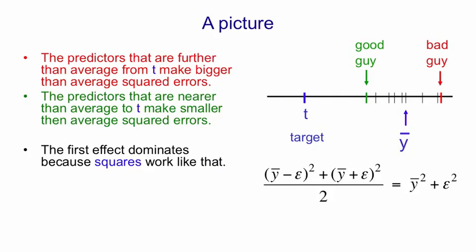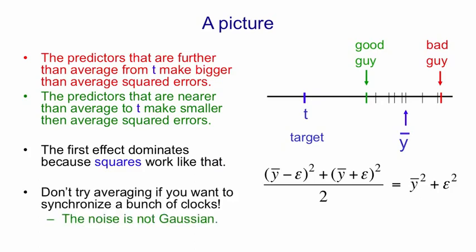If, for example, you have a whole bunch of clocks and you try and make them more accurate by averaging them all, that'll be a disaster. It'll be a disaster because the noise you expect in clocks isn't Gaussian noise. What you expect is that many of them will be very slightly wrong, and a few of them will have stopped or will be wildly wrong. And if you average, you make sure they're all significantly wrong, which is not what you want.